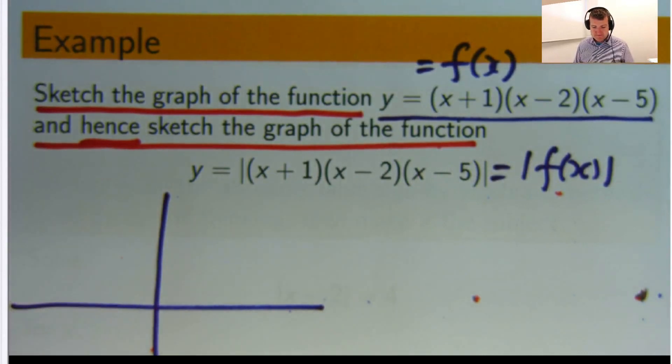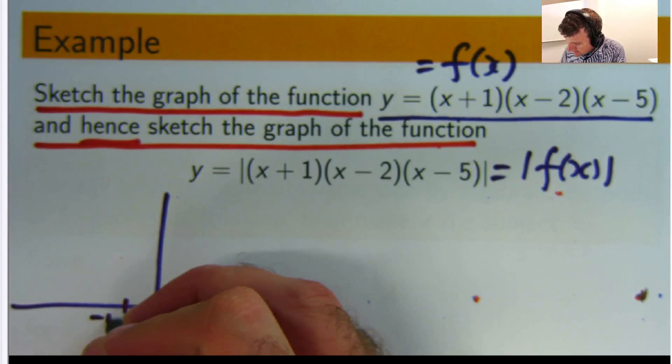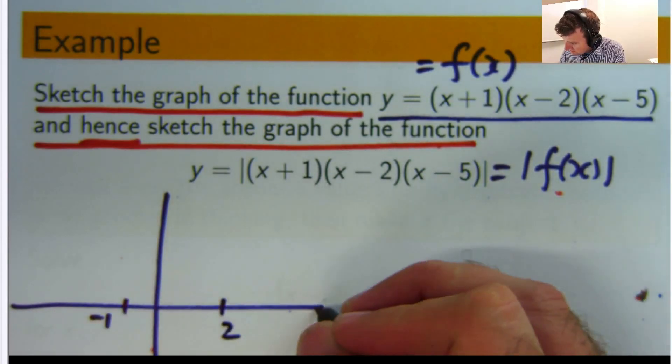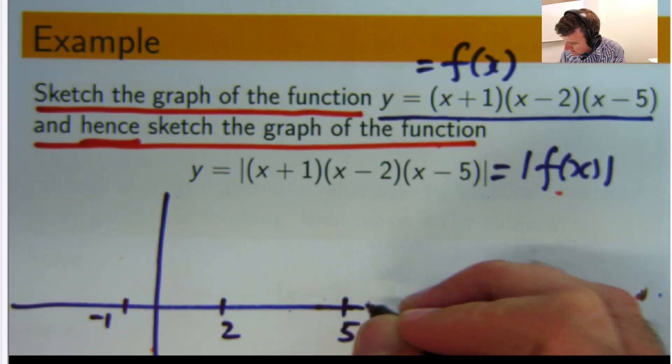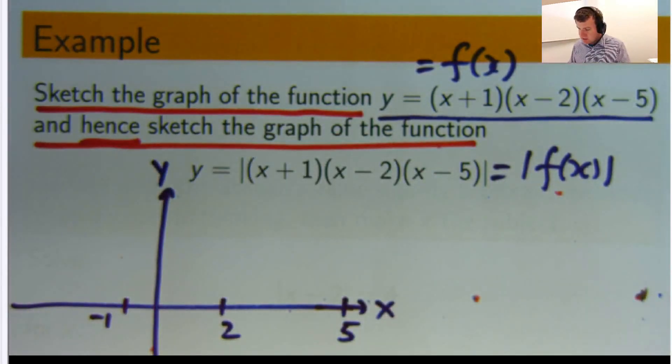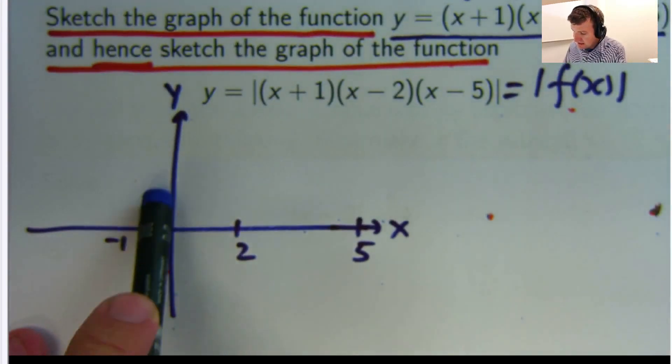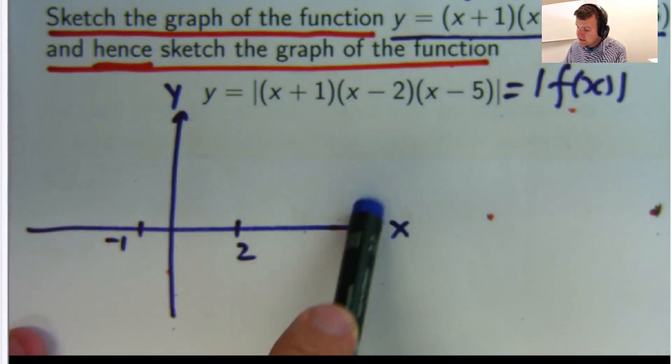Okay? So negative 1, positive 2 and positive 5. Okay? And it'll look something like this. It'll sort of go, it'll start down here and it'll go sort of up here, come back down and straight up again. Okay? It's a nice smooth curve.